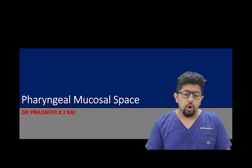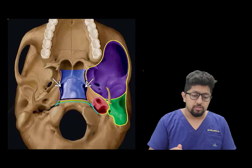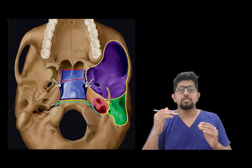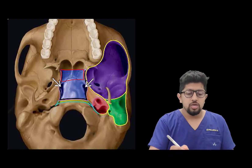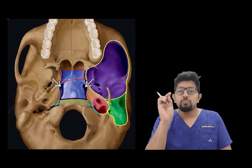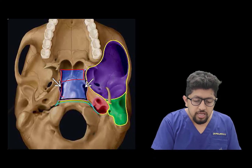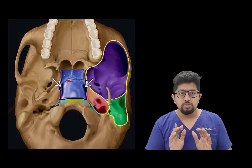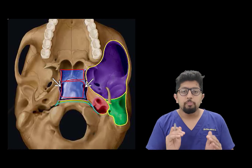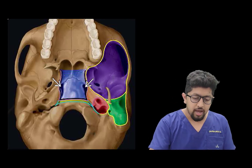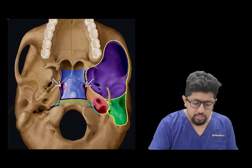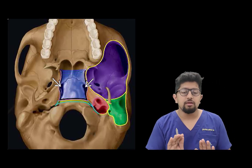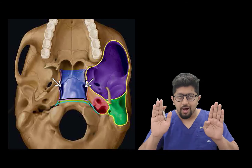On the skull base, the space attaches to the basisphenoid, beneath which lies the sphenoid sinus, and to the basiocciput — the anterior part of the clivus. On the lateral aspect of the basiocciput, there is a small foramen called the foramen lacerum, which is normally covered by cartilage.